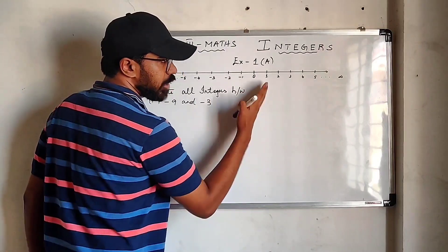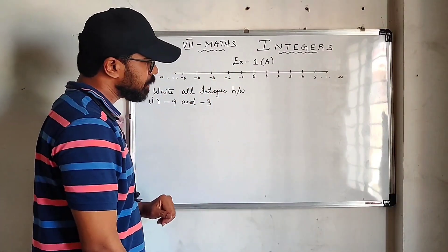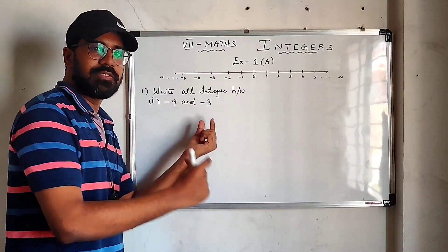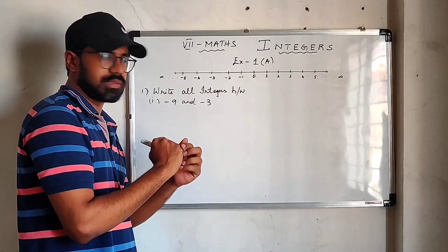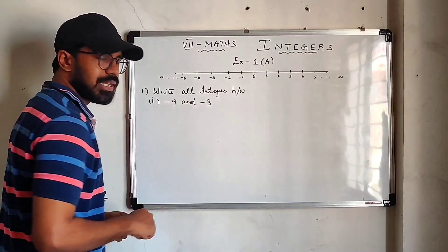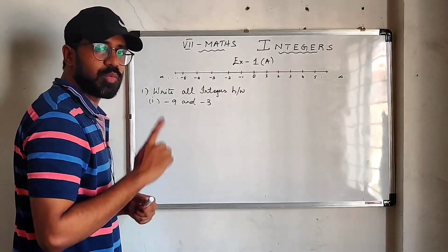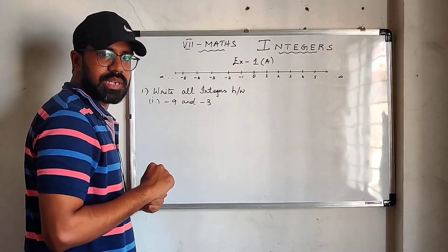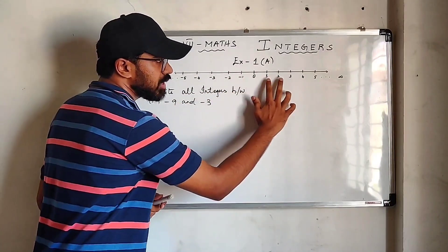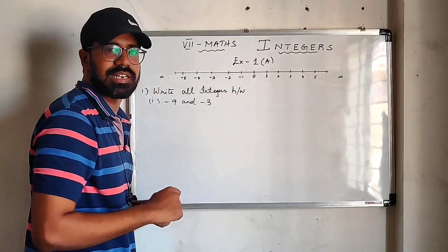Here, this is 0, and towards the right are the positive integers, towards the left are the negative integers. Now they are asking us for the numbers between these two negative integers — minus 9 and minus 3. Each successive integer: if you take any two successive integers, the right number is always greater than the left number.